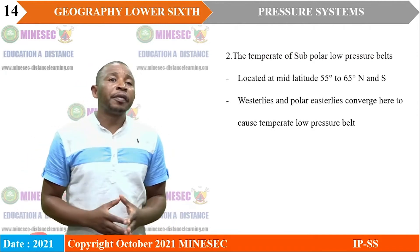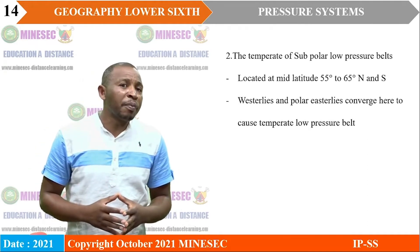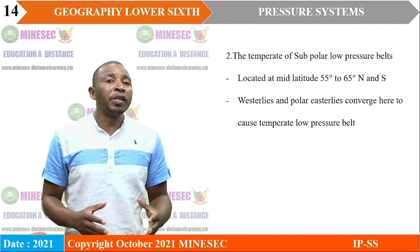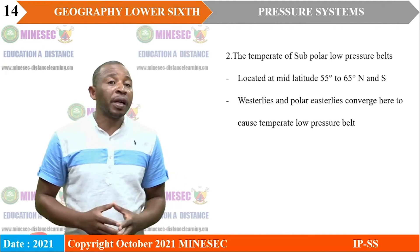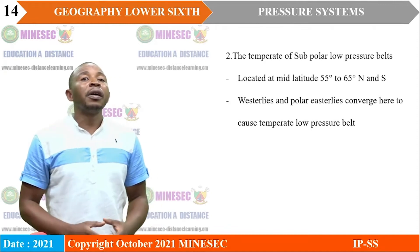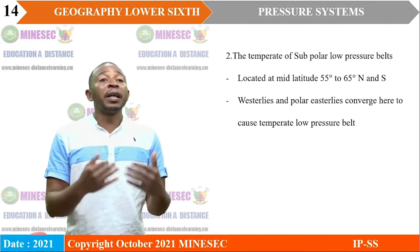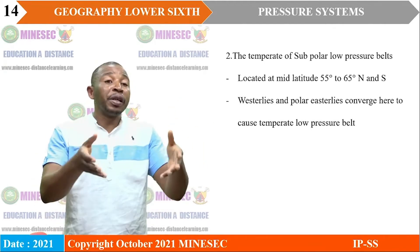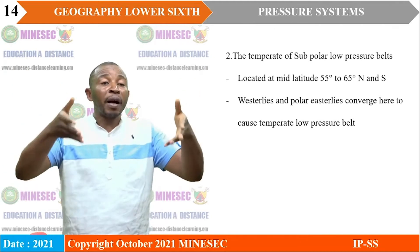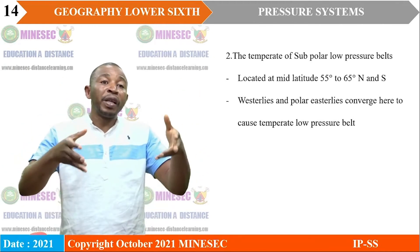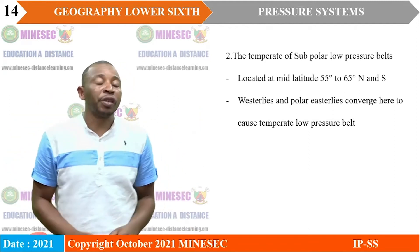The second belt is the temperate subpolar low pressure belt, located between latitude 55° to 65° north and south of the equator. In these areas, the westerlies and the polar easterlies converge, as winds blow from high pressure belts into this low pressure region.